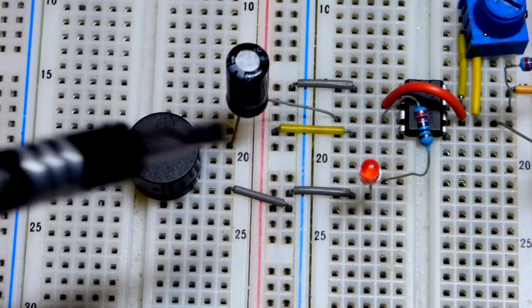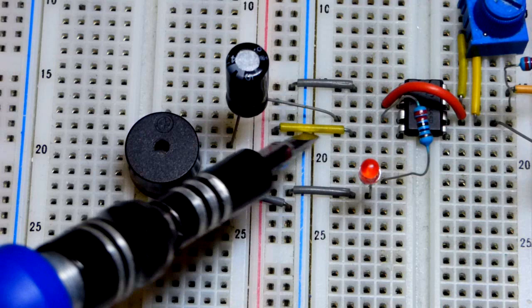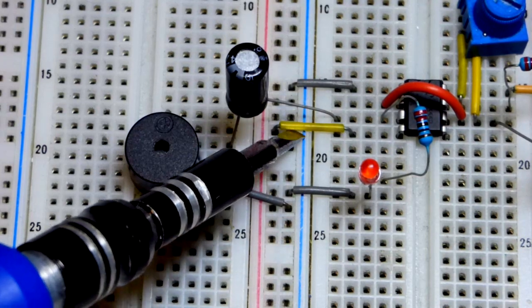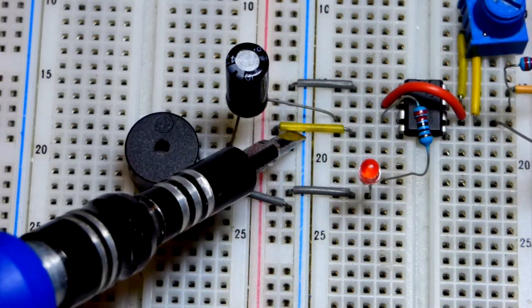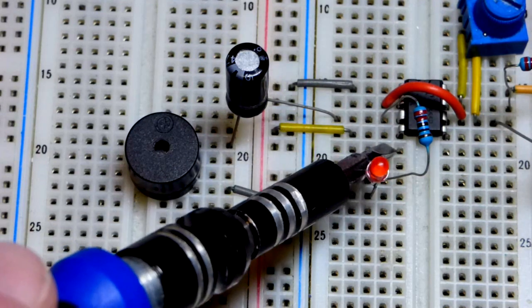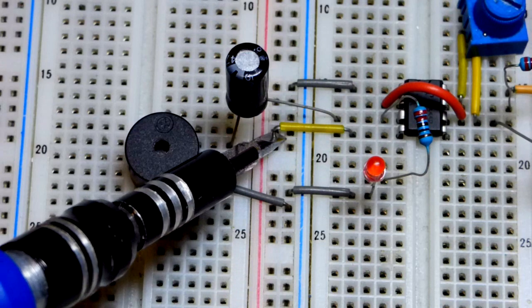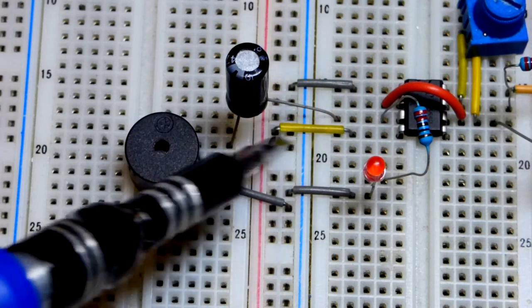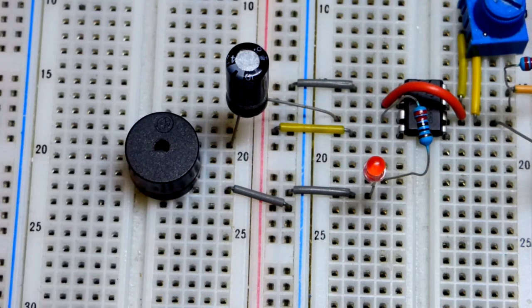One more thing before I forget: we have the reset pin right here. It's waiting for a low input, basically connected to ground or close to ground—I think less than half of the supply voltage. We don't want it to do anything, so we put it directly to the positive side of the supply voltage and then it does nothing.